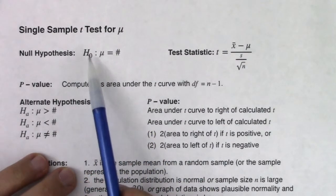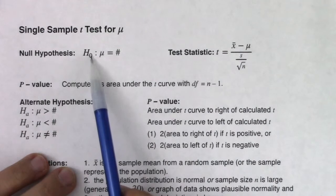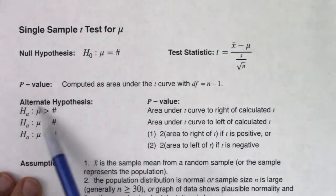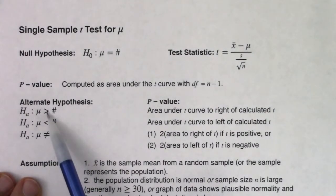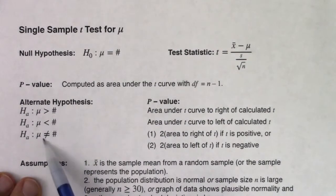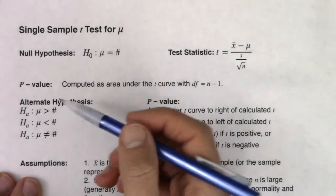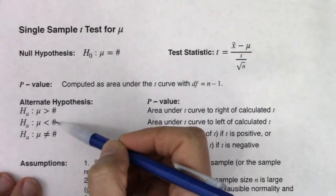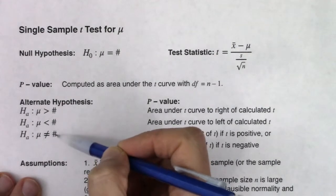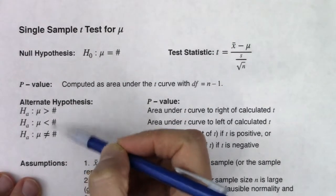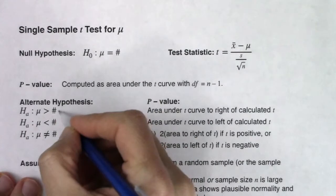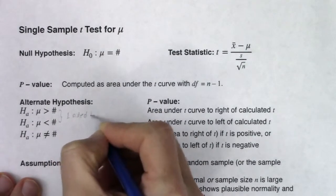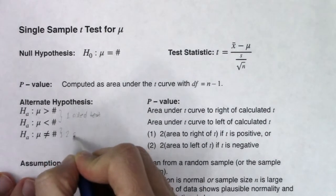So we're going to have that null hypothesis where you have H-sub-0, mu equaling some number, and then the alternate — you're going to either have a greater than, a less than, or a not-equals-to. Just like before, this is a right-tailed test, a left-tailed test, and a two-tailed test — or we could call the first two one-sided tests and this one a two-sided test.